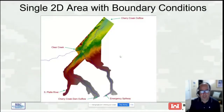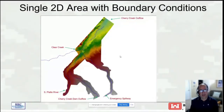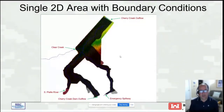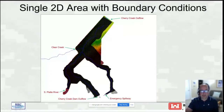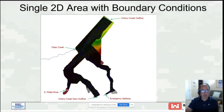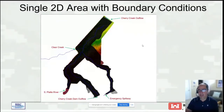This first model is a dam break model for Cherry Creek, one of the first RAS 2D models ever developed, with a beta version around 2014. It's a single two-dimensional flow area. The dam is at the bottom of the screen — we're not modeling the dam itself. We have a flow boundary condition for Cherry Creek Dam Outflow, an emergency spillway boundary condition, flow boundary conditions at the South Platte River and Clear Creek, and a downstream boundary condition using Manning's equation or normal depth outflow.